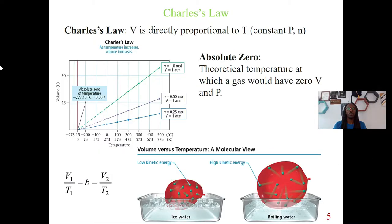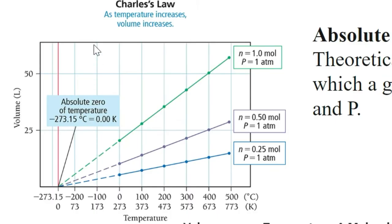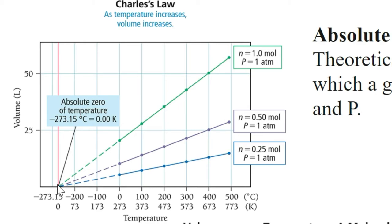Next is Charles' law. Charles' law states that volume is directly proportional to temperature. In this case, pressure and moles are going to stay the same — those are our constants. Looking at this graph, we have our moles and pressure being constant. Say we have one mole at one atmosphere pressure, 0.5 moles at one atmosphere, and 0.25 moles also at one atmosphere. The only difference is the amount of moles, and we all start at absolute zero — zero Kelvin.